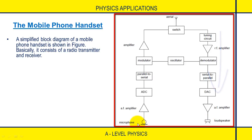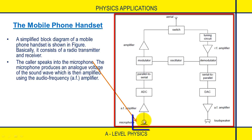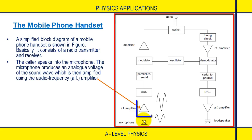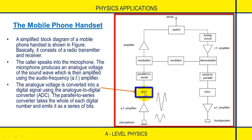Let's start with the mobile phone handset being used as a transmitter. We start with the microphone — the caller speaks into the microphone, which produces an analog voltage of the sound wave. This analog signal is then amplified by the audio frequency amplifier.